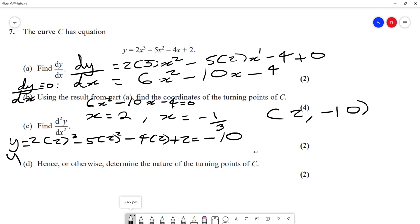Then we can substitute minus a third in. So it is 2 times minus a third cubed, minus 5 times minus a third squared, minus 4 times minus a third, plus 2.